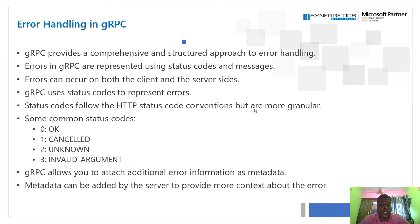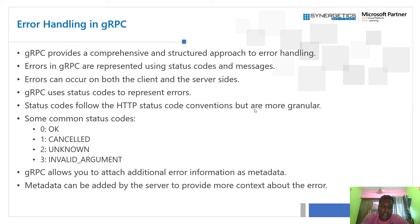gRPC uses status codes to represent errors, similar to HTTP, but they are more granular. For example, 0 represents success, 1 represents a cancelled operation, 2 represents an unknown exception, and 3 represents an invalid argument or bad request. gRPC also allows you to attach additional error information as metadata — similar to WCF message contracts — so the server can provide more context about the error that occurred.